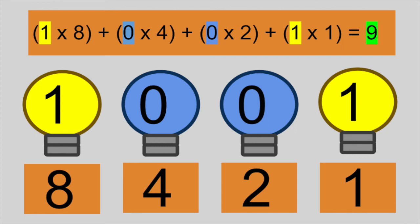To represent 9, we write 1, 0, 0, 1 in binary. It's 8 plus 1.